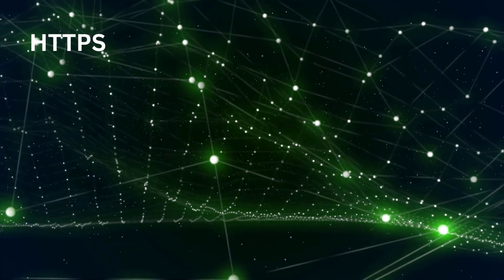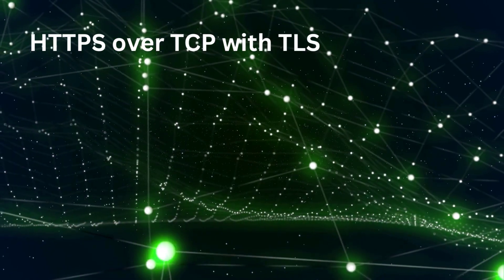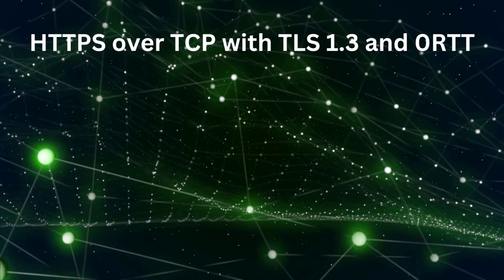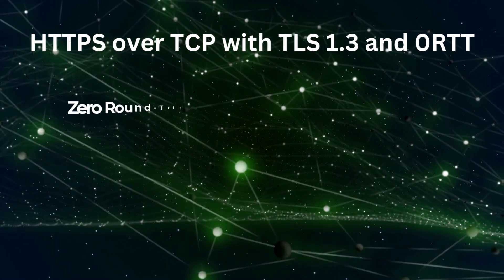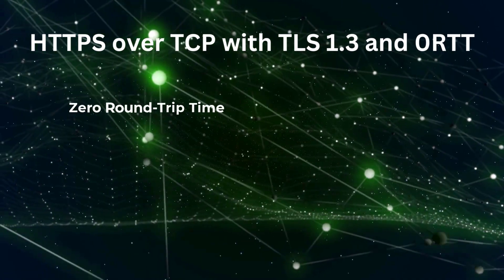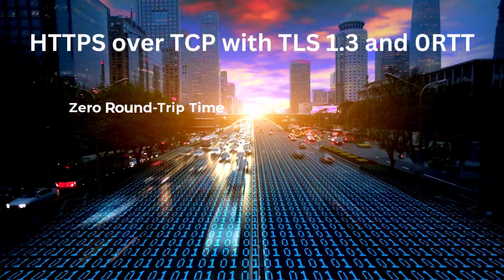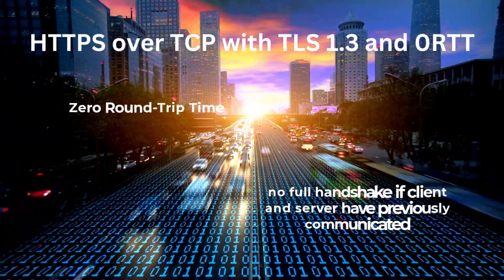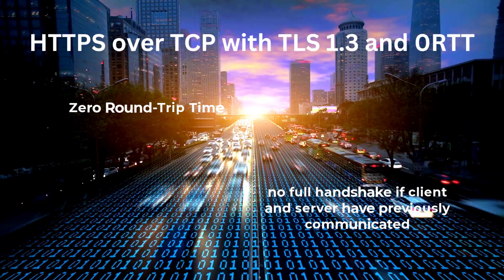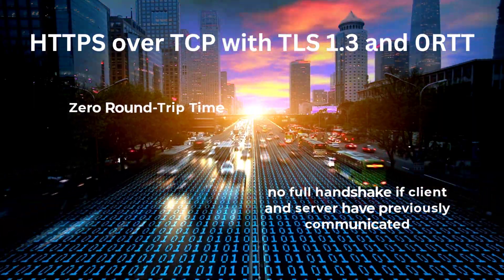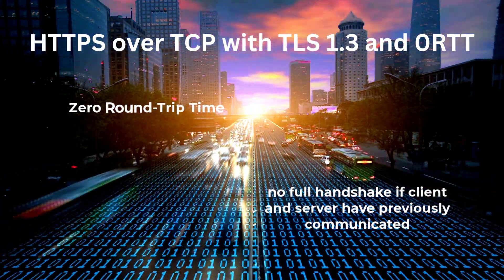Another variation of HTTPS is using TCP with TLS 1.3 and Zero RTT, or Zero Round Trip Time. Zero RTT allows for faster connection establishment by eliminating the need for a full handshake when the client and the server have previously communicated. This results in a quicker, more efficient HTTPS connection.